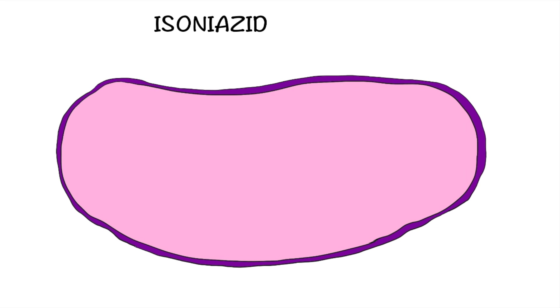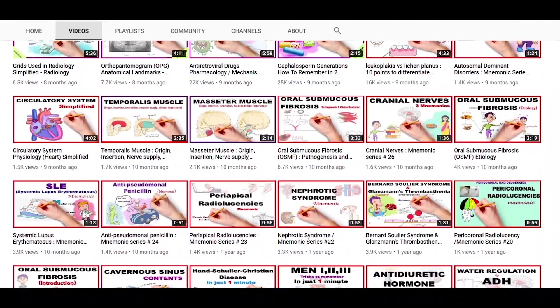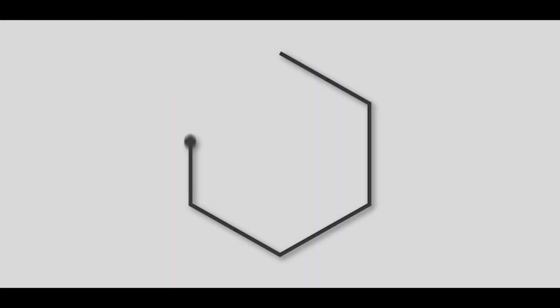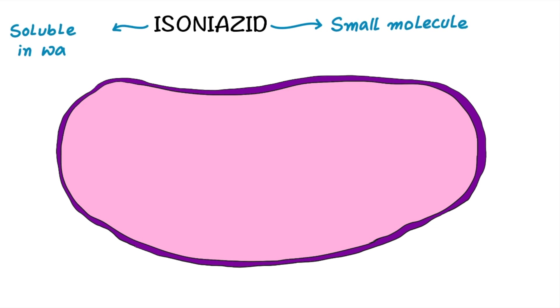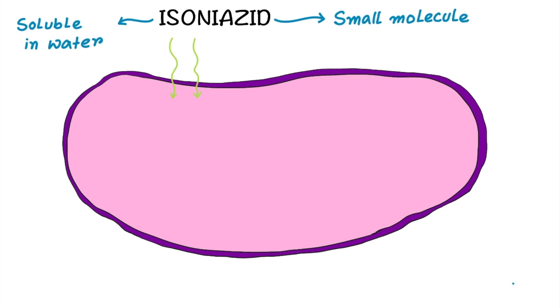Hello everyone, today we will discuss about isoniazid in detail. I will also share some memorizing tips, so stay tuned. Isoniazid is the single most important drug used in tuberculosis. It's a small molecule that is freely soluble in water, and that's why it passively diffuses into the mycobacterium.